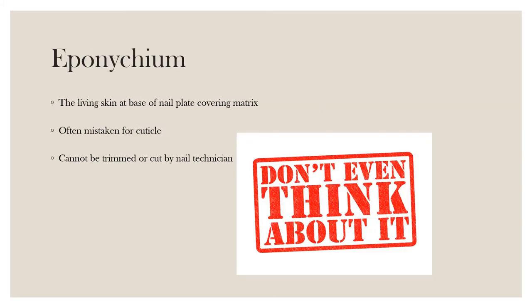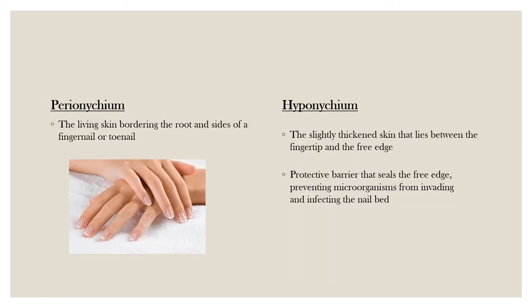The eponychium is the living skin at the base of the natural nail plate, covering the matrix area. The eponychium is often mistaken for the cuticle, but they are not the same. The cuticle is dead tissue adhered to the nail plate; the eponychium is living tissue that grows up to the nail plate. The cuticle comes from the underside of this area where it completely detaches from the eponychium and strongly attaches to new nail plate growth, pulling free to form a seal between the nail plate and the eponychium.